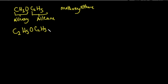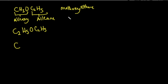To create a metamer of ethoxy ethane, the principle is: reduce the number of carbon atoms on one alkyl group and increase the other by that same factor. We remove one carbon from one side and add it to the other side to get a metamer.